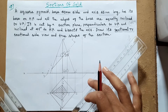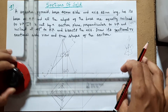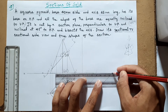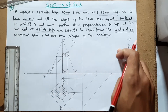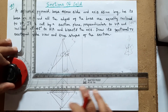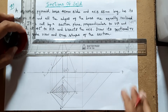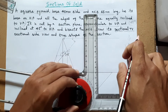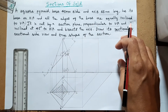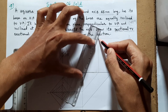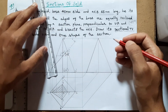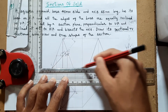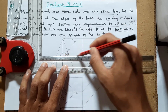I have projected all the lines. Now we will be constructing the side view. This is the base of the pyramid. The axis height remains the same and can be projected from the front view.